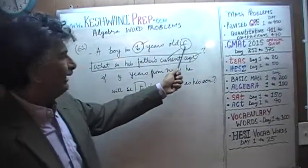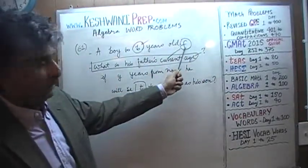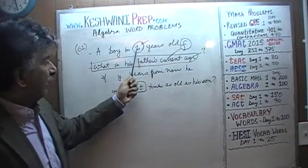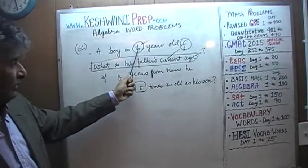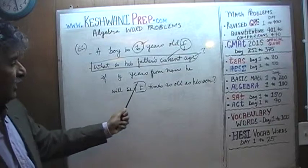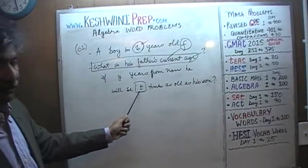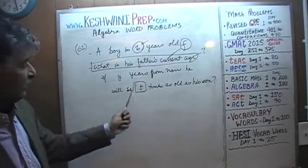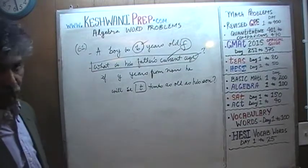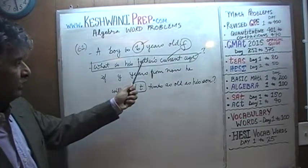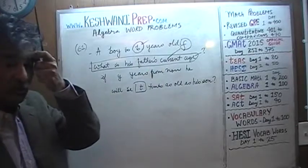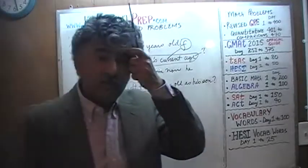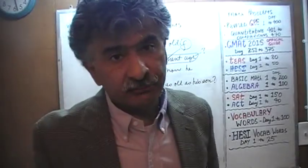Remember, that's the only unknown quantity. We are told the boy is b years old today — that's a known quantity. Y years from now the father is going to be t times as old — those are also known quantities. The only unknown quantity is F, and that's what we have to solve for: the father's current age.